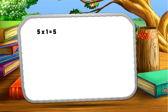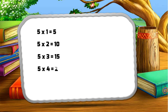Table of five. Five one za five, five two za ten, five three za fifteen, five four za twenty, five five za twenty-five, five six za thirty.